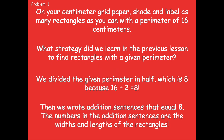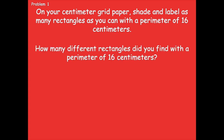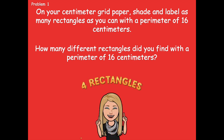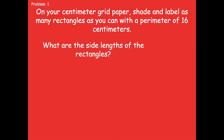Pause if you need more time. So how many different rectangles did we find with a perimeter of 16? How many different addition sentences did you write? It's four rectangles — we had four different addition sentences. The side lengths are: 1 plus 7 equals 8, 2 plus 6 equals 8, 3 plus 5 equals 8, and 4 plus 4 equals 8. Those are our four rectangles.